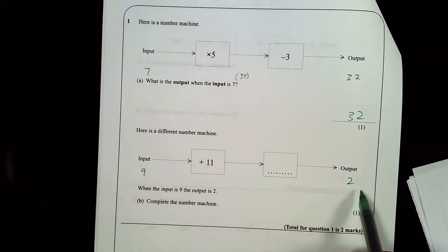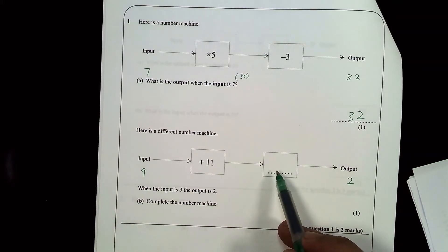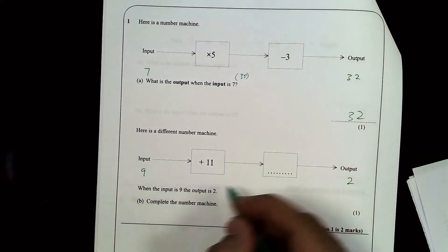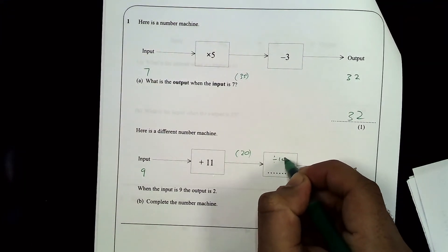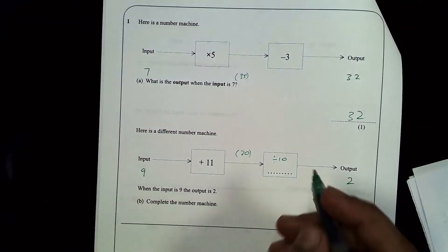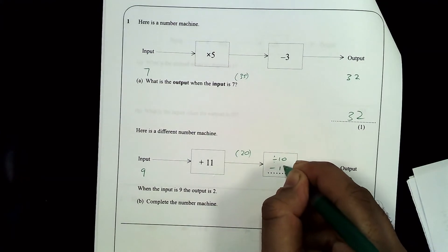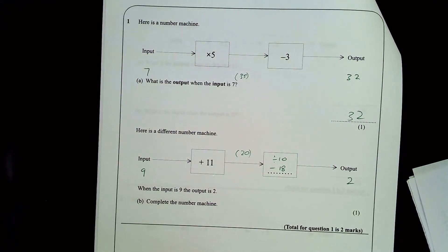20 something makes 2. So there are a couple of different answers. There's lots of things I could do to it to make it into 2. If I've got 20 at this stage, it could be divide by 10. 20 divided by 10 makes 2. It could be take away 18. 20 take away 18 makes 2.